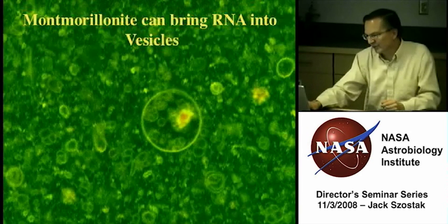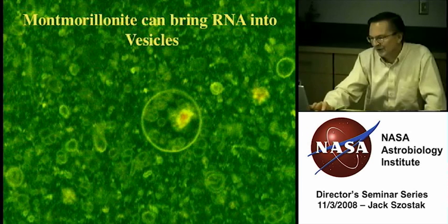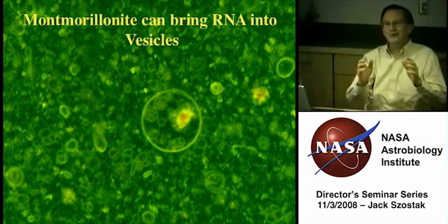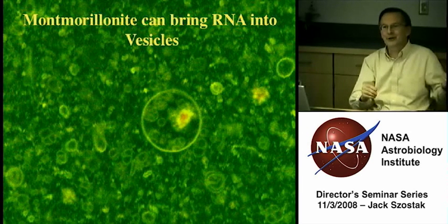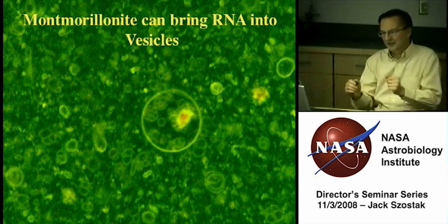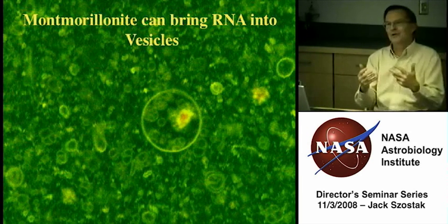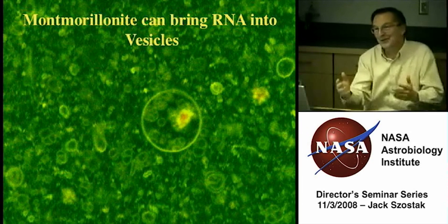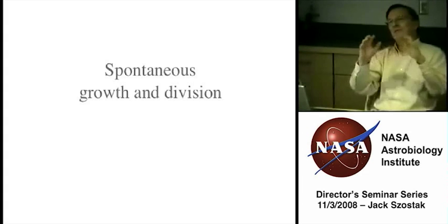They then tried absorbing RNA molecules onto the surface of the clay, mimicking a situation where clay had actually catalyzed RNA assembly, to see if that RNA-coated clay could also catalyze vesicle assembly — and it did. In these images, you can see clay particles bearing fluorescently tagged RNA on their surface trapped within large vesicles filled with hundreds of smaller vesicles. So this common, abundant mineral can catalyze the assembly of both RNA genetic material and the bilayer membrane, actually bringing together the two main components of a simple protocell.